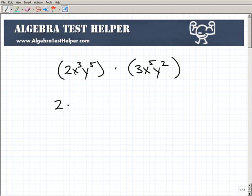If I have (2x³y⁵) times (3x⁵y²), I can break this up or think of these as their factors: 2 times x³ times y⁵ times 3 times x⁵ times y².